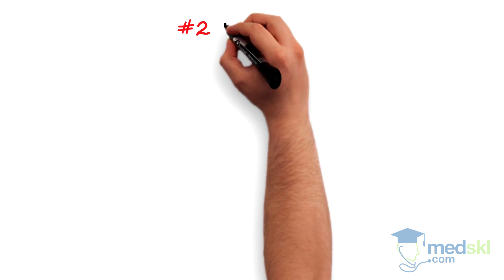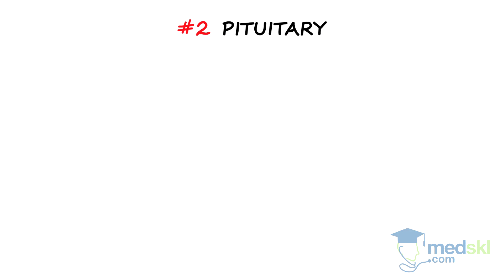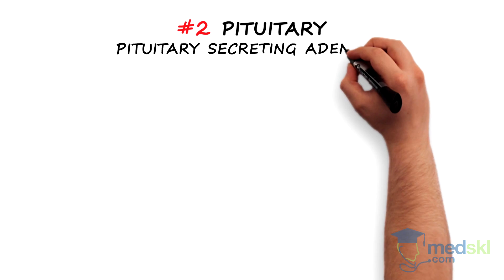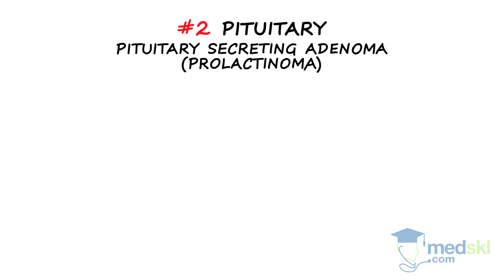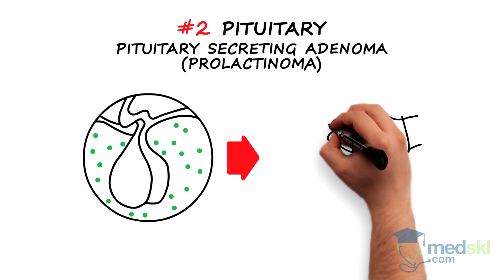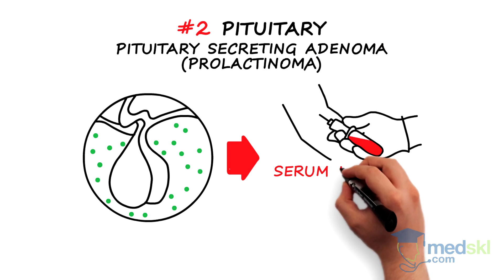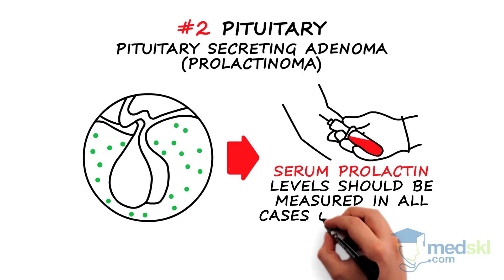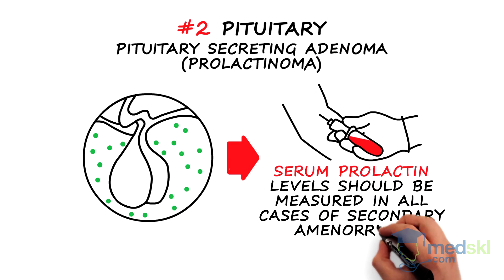Number 2: Pituitary. The most common pituitary cause of secondary amenorrhea is a pituitary secreting adenoma, such as a prolactinoma. As such, serum prolactin levels should be measured in all cases of secondary amenorrhea, whether there are symptoms present or not.